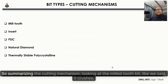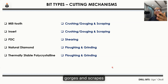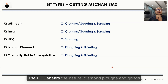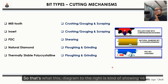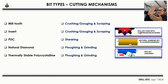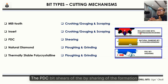Summarizing the cutting mechanisms: the mill tooth bit crushes, gorges, and scrapes; the TCI insert does the same — crushes, gorges, and scrapes. The PDC shears the formation. The natural diamond plows and grinds. This diagram to the right shows the cutting mechanism of the roller cone bits — compresses, deforms, crushes, and scrapes — while the PDC bit cuts by shearing.